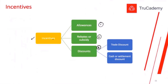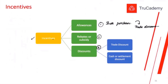First, allowances. Allowances are when suppliers offer their customers additional trade discounts for bulk purchases. They tell their customers that if you are going to buy more than some specific quantity, we will give you additional trade discounts on this amount, just to motivate bulk purchases.